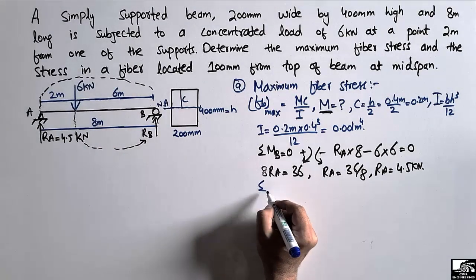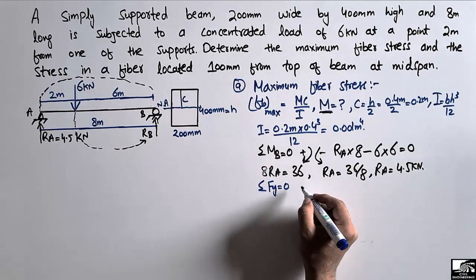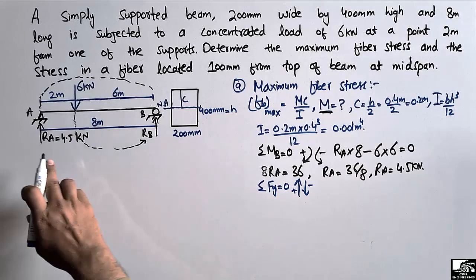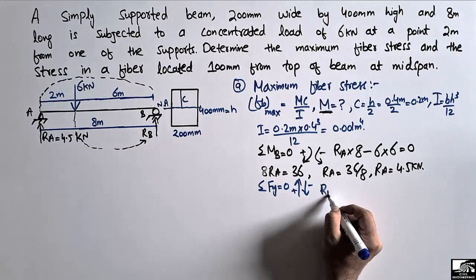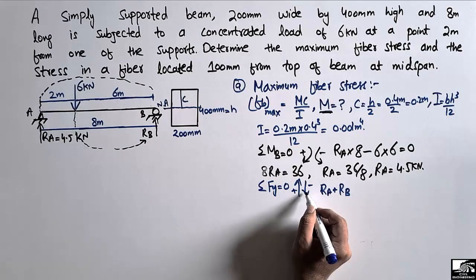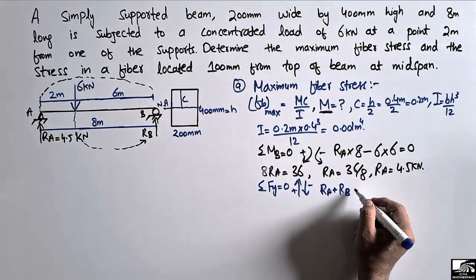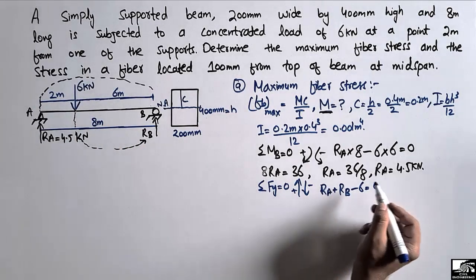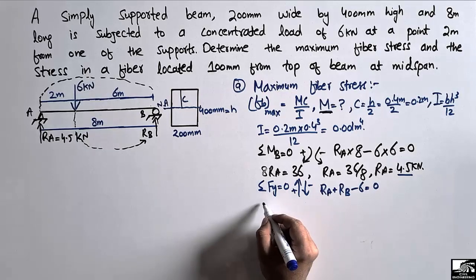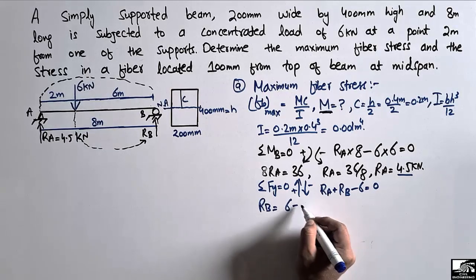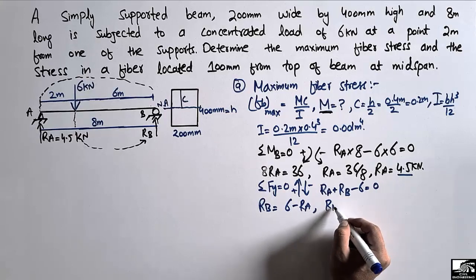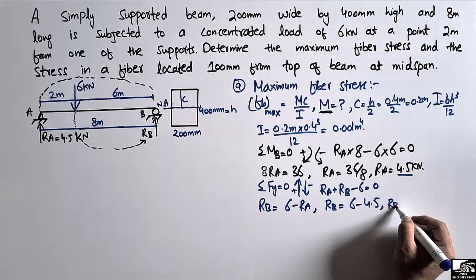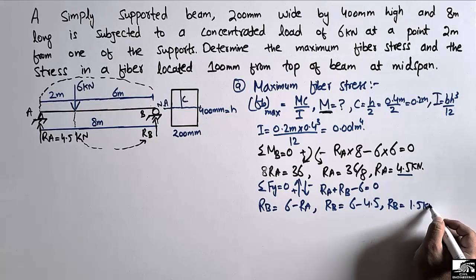To find R_B, we use the equilibrium equation: summation of vertical forces equal to zero. Upward forces R_A and R_B minus the downward force of 6 kilonewton equals zero. With R_A equal to 4.5, R_B equals 6 minus 4.5, so R_B equals 1.5 kilonewton.